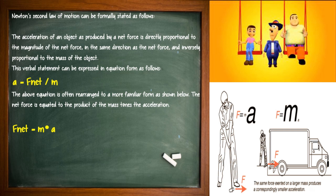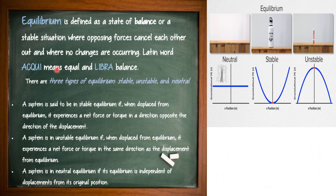Newton's Second Law of Motion: the acceleration of an object is directly proportional to the magnitude of the net force. Equilibrium is defined as a state of balance or a stable situation where opposing forces cancel each other out and where no changes are occurring.